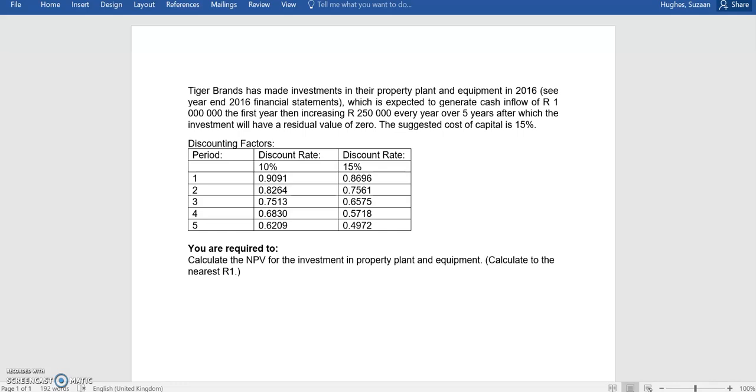Tiger Brands made investments in their property plant and equipment in 2016. You have to look at the financial statements to get the actual capital investment amount, and it's expected to generate cash inflow of $1 million in the first year, increasing by $250,000 every year over five years, after which the investment will have a residual value of zero.